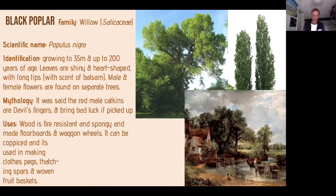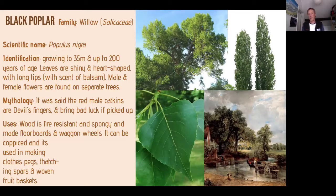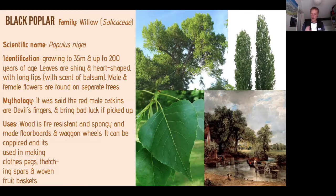Black poplar is not very common, mainly due to habitat loss. It's a grand tree down by rivers with beautiful big branching form, in contrast to Lombardy which sticks up. The reason it's declining is that its seeds need to germinate in wet ground, and land reclamation and agricultural drainage have made germination less effective. So it's on a downward spiral sadly because of our drainage.